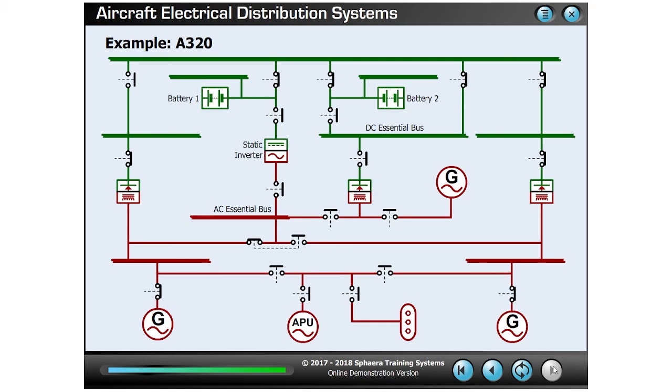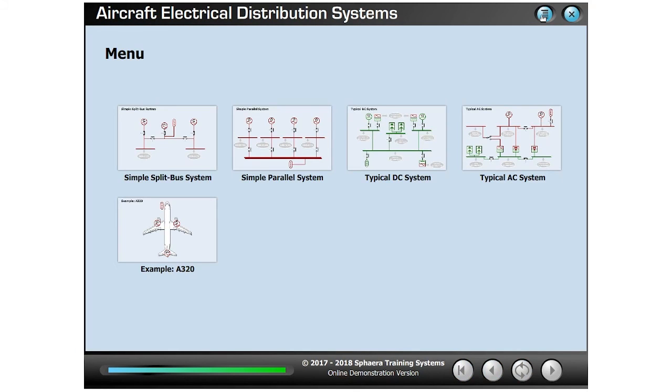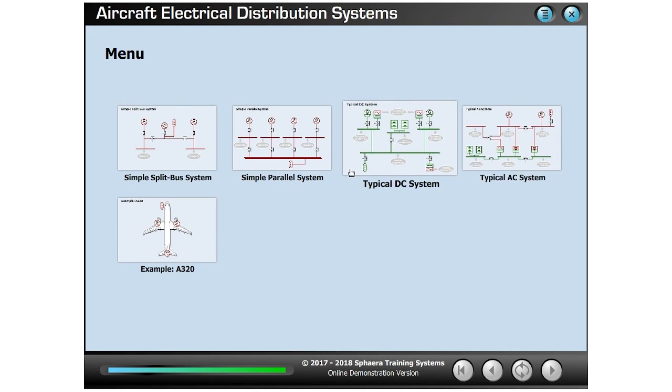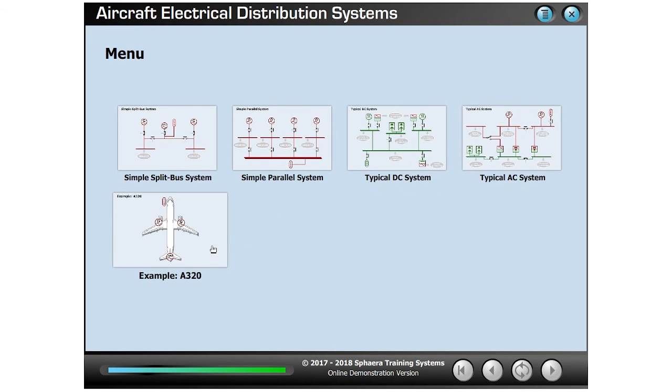The CBT software that was used for the lesson was part of a package of electrical systems that can all be used in the classroom to easily deliver lessons like the one you have just seen. The package contains electrical systems of varying levels of complexity, beginning first with a simple split bus and parallel system, before advancing to a typical DC system, typical AC system, and finally the A320 system which we saw earlier.